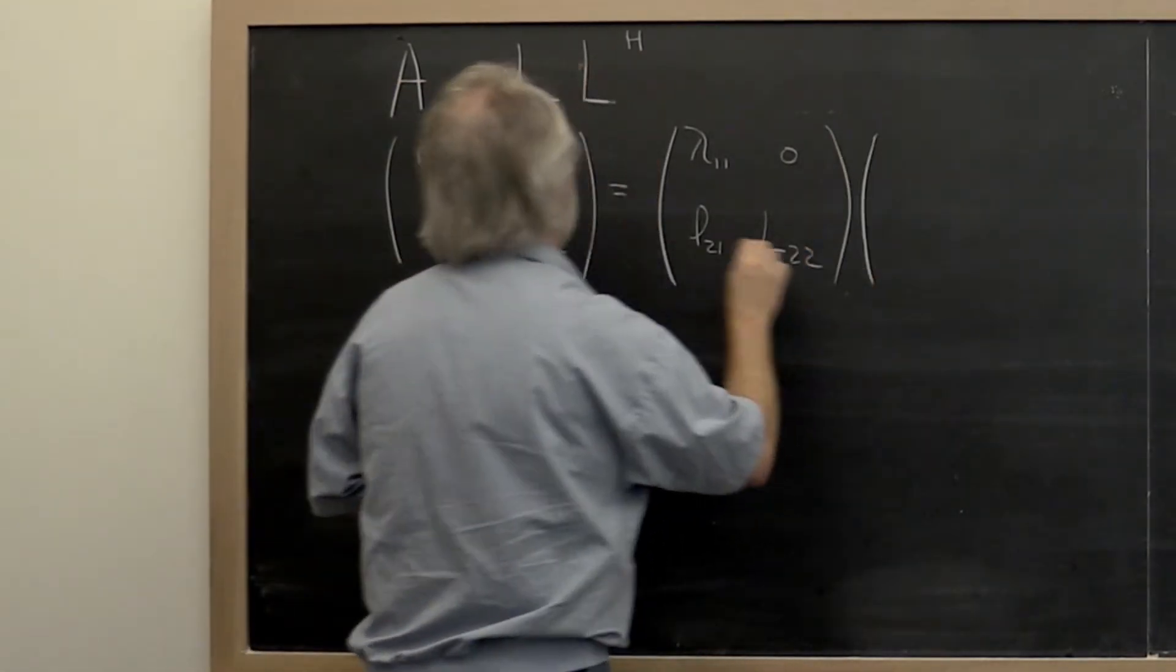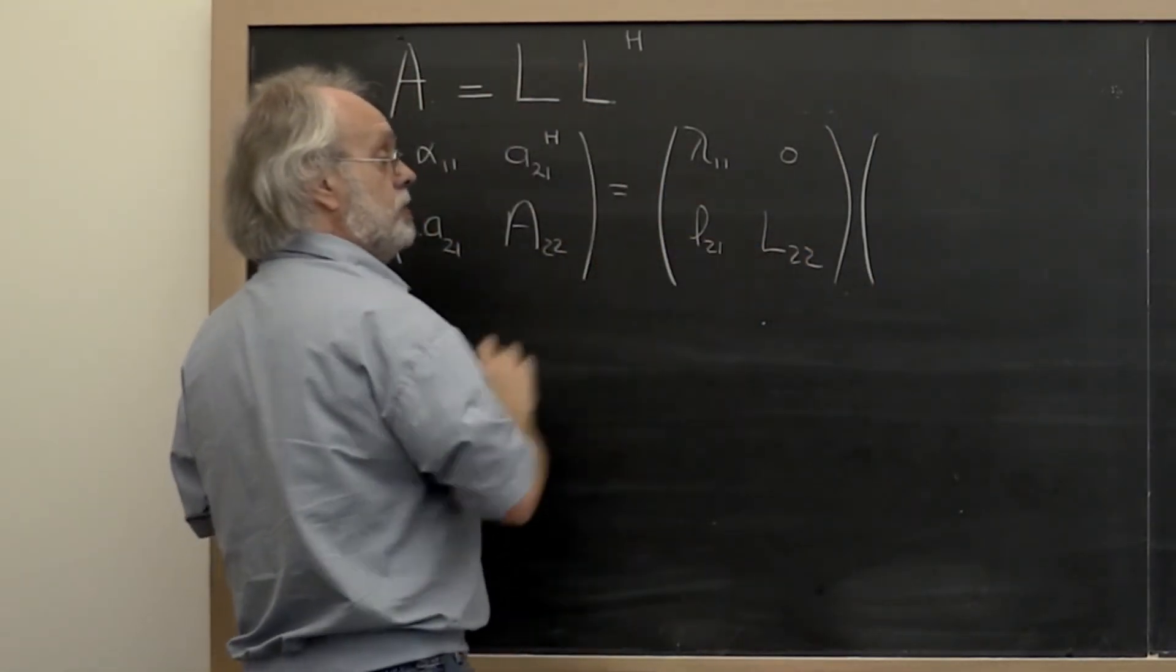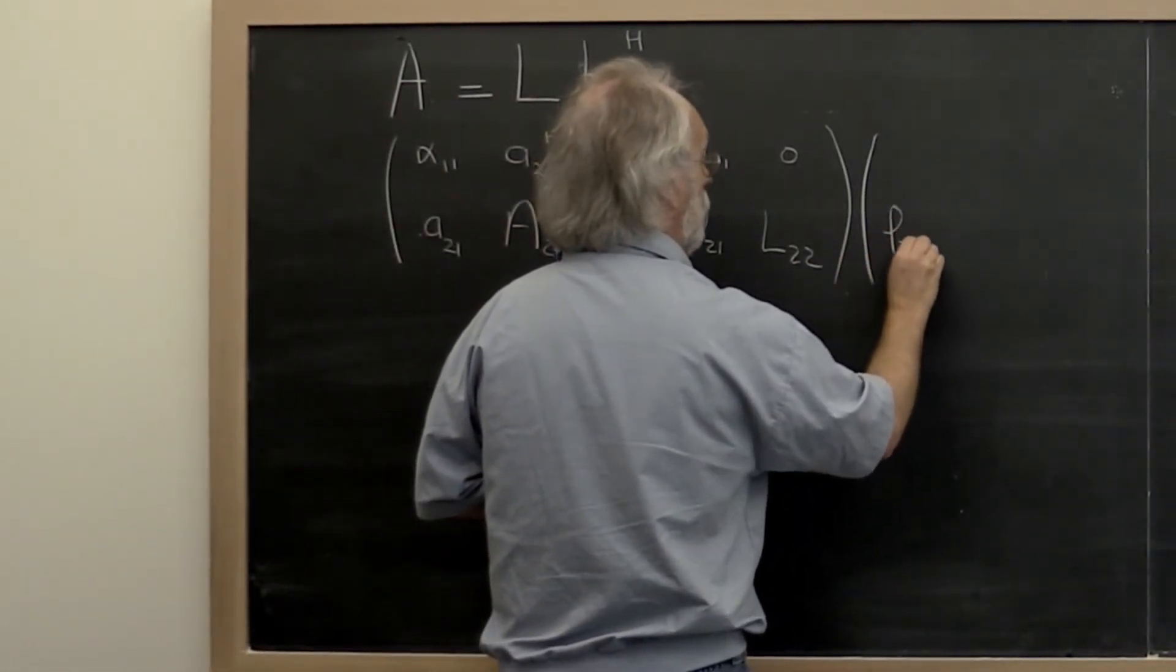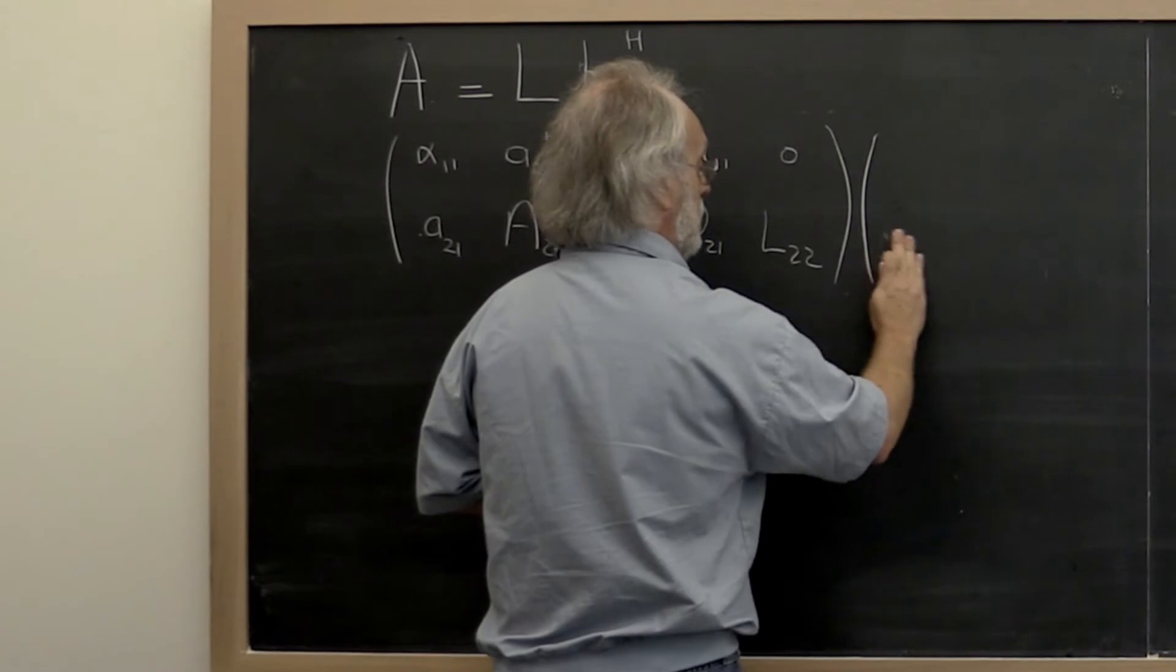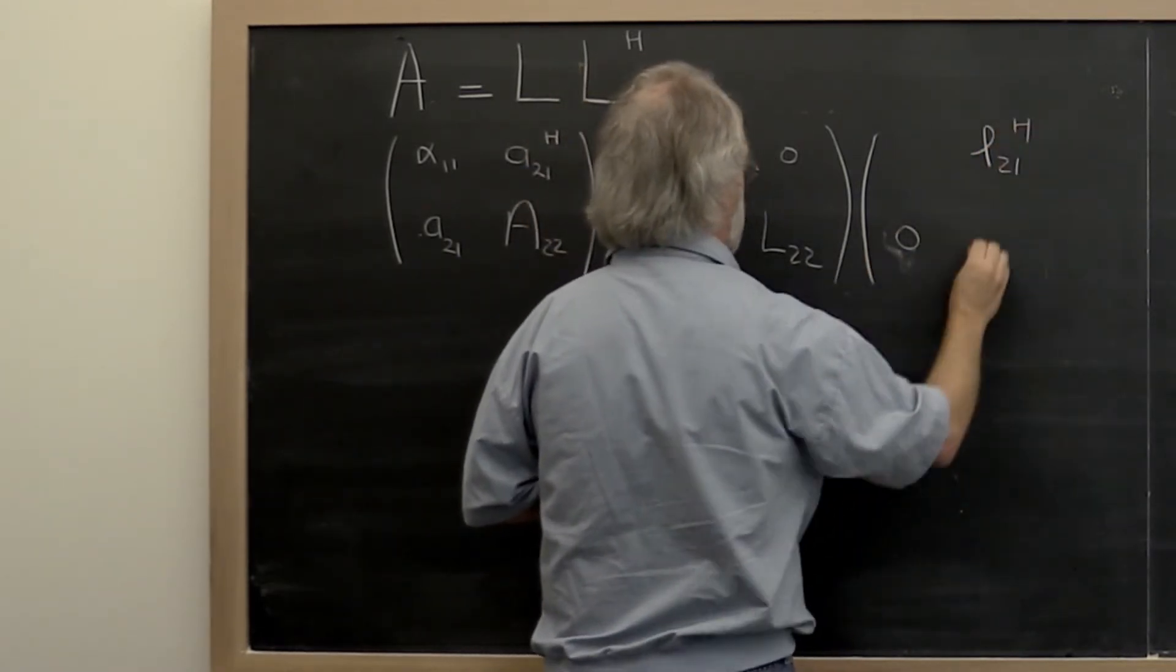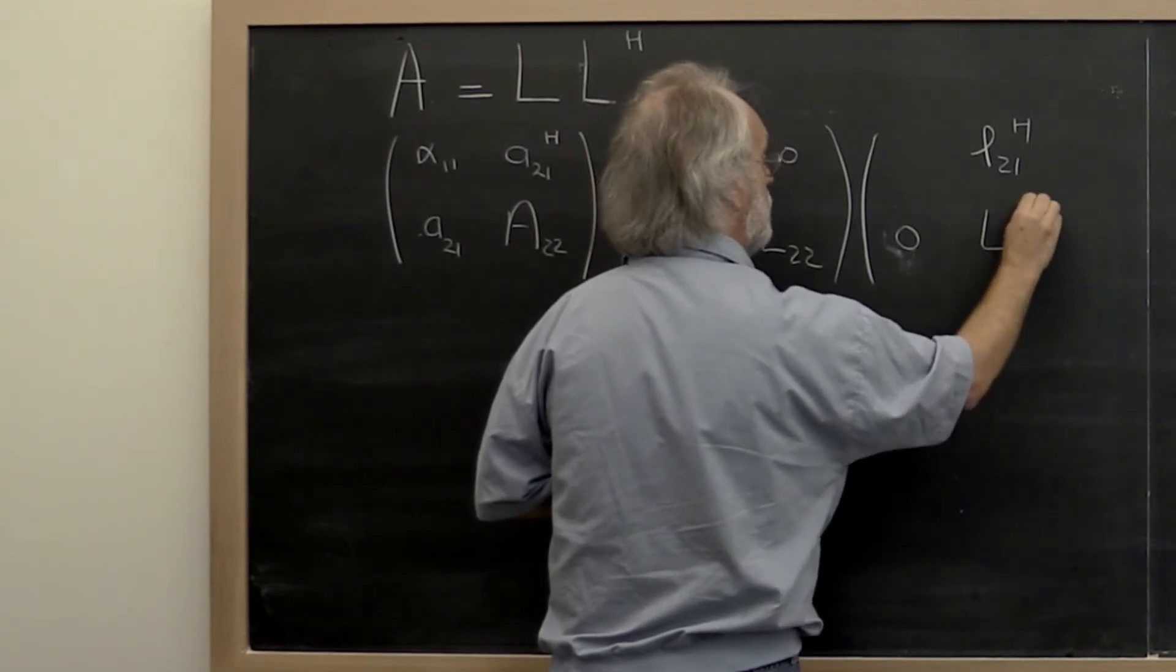And then if we multiply that times the Hermitian transpose of this, what we get is, this should now be 0. This should be L_2,1 Hermitian transpose. This should be L_2,2 Hermitian transpose.